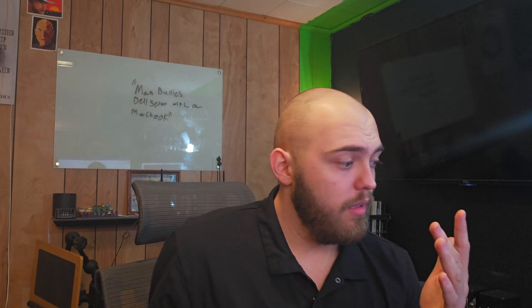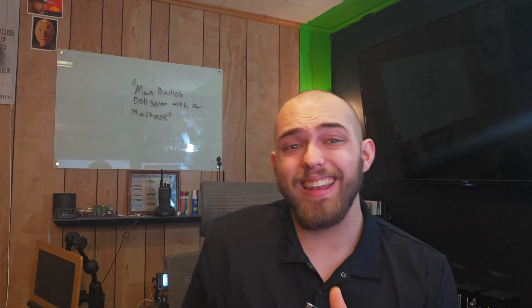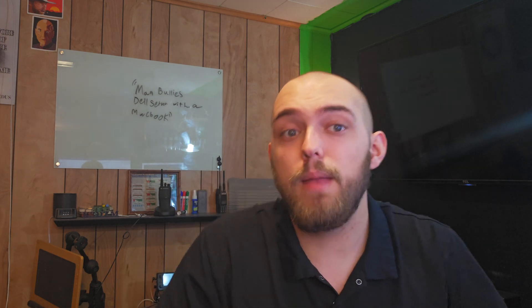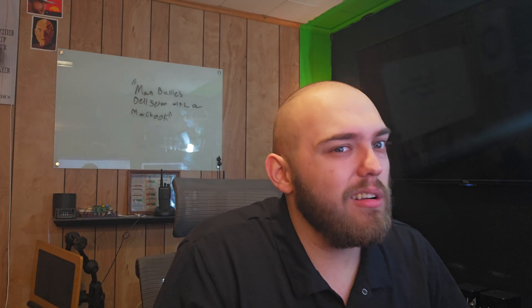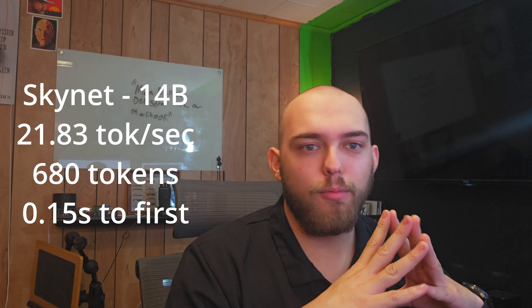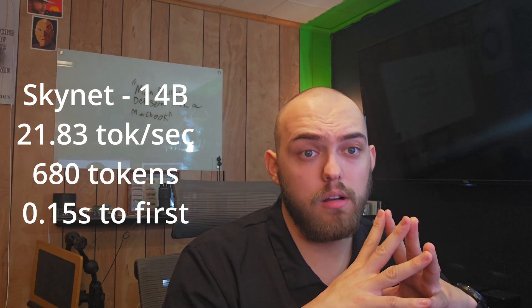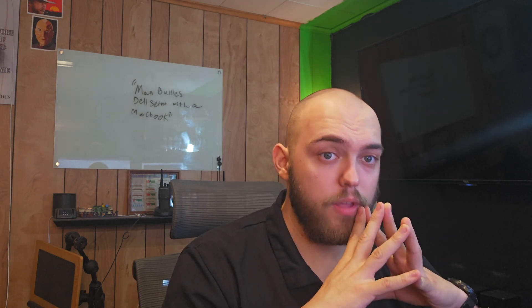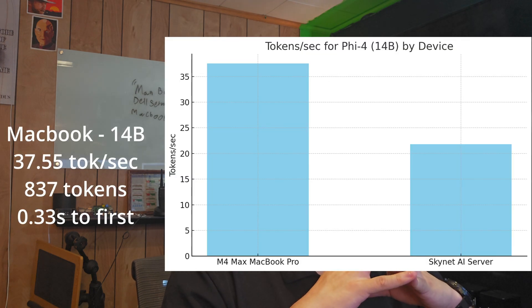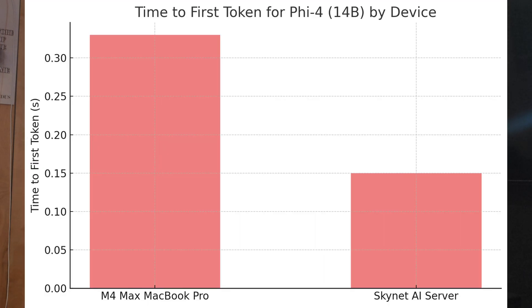If you want to get into AI, what about PHI-4, which is Microsoft's model? It's a 14 billion parameter model, significantly larger than Hermes but not quite as large as the 70 billion. On the Skynet server, 21.83 tokens a second average, 680 tokens generated, and 0.15 seconds to first token. On the MacBook Pro with the M4 Max chip, 37.55 tokens a second, 837 tokens generated, and 0.33 seconds to first token.